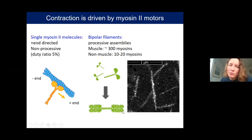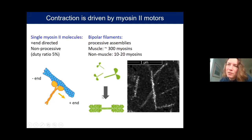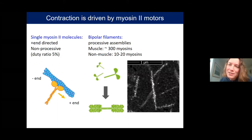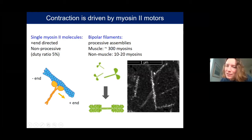Myosin tails recognize each other through electrostatic interactions, giving rise to bipolar filaments with myosin heads on the two ends and tails in the middle. In muscle, these assemblies are present in sarcomeres with about 300 myosins per filament; in non-muscle cells they are smaller, about 10 to 20 myosins per filament. In our experiments, we use skeletal muscle myosin, which assembles in the test tube, with electron microscopy showing filaments averaging around 100 myosins each.